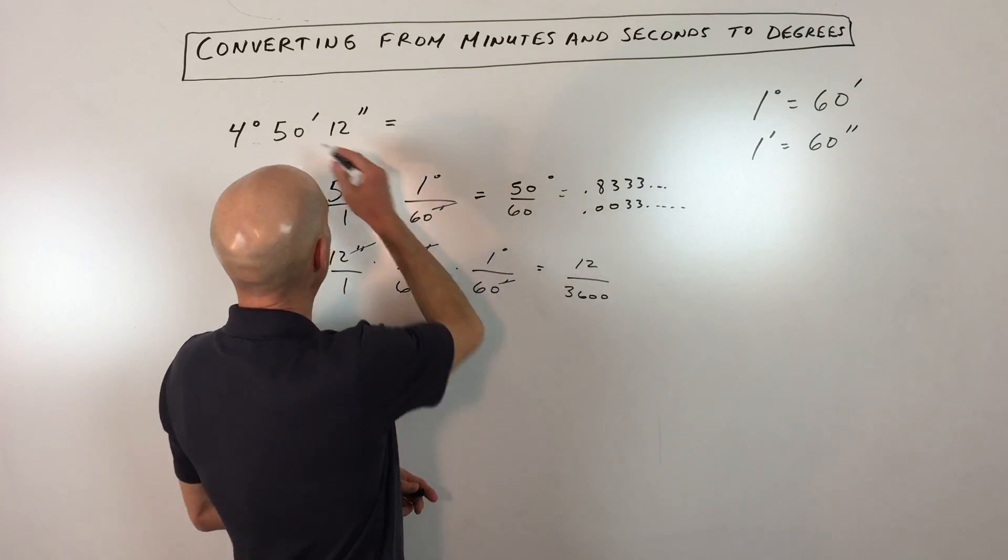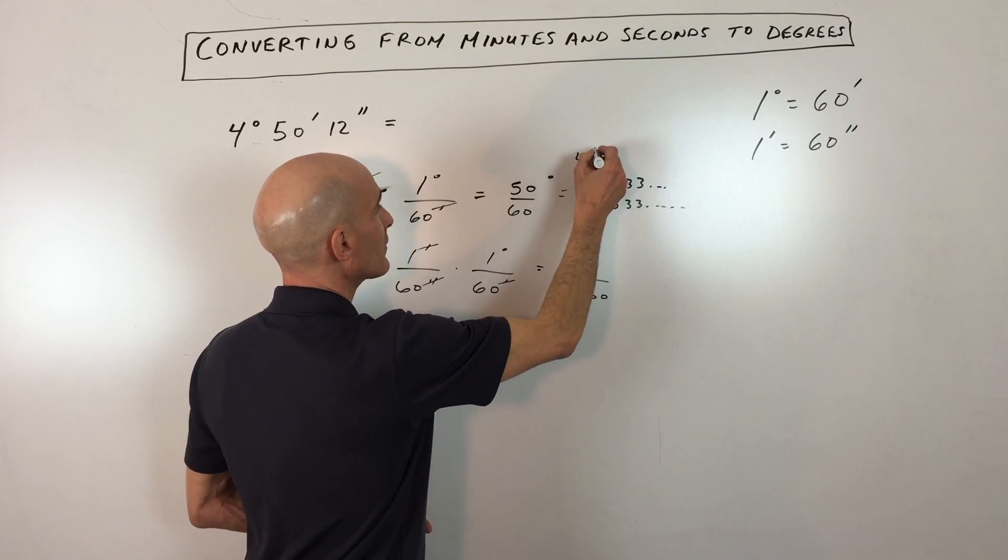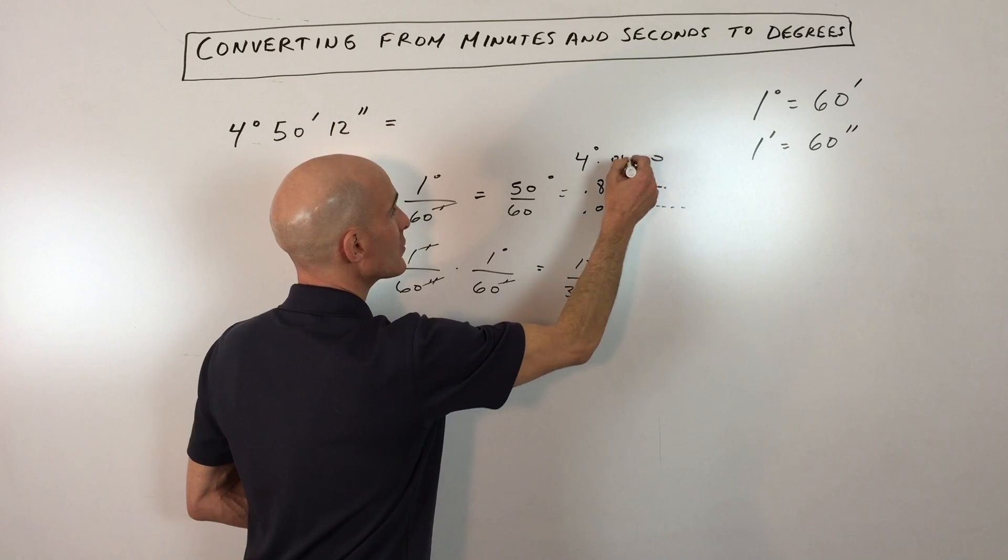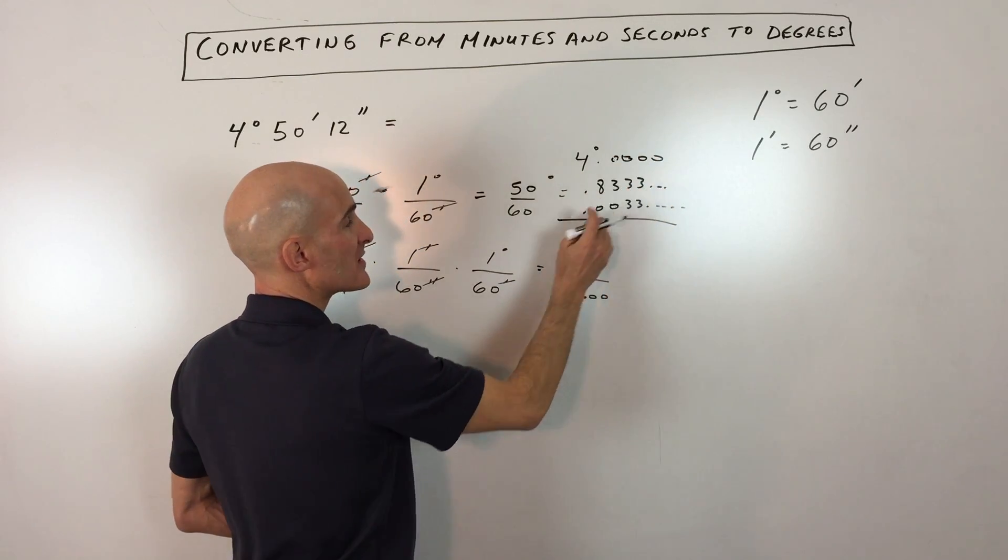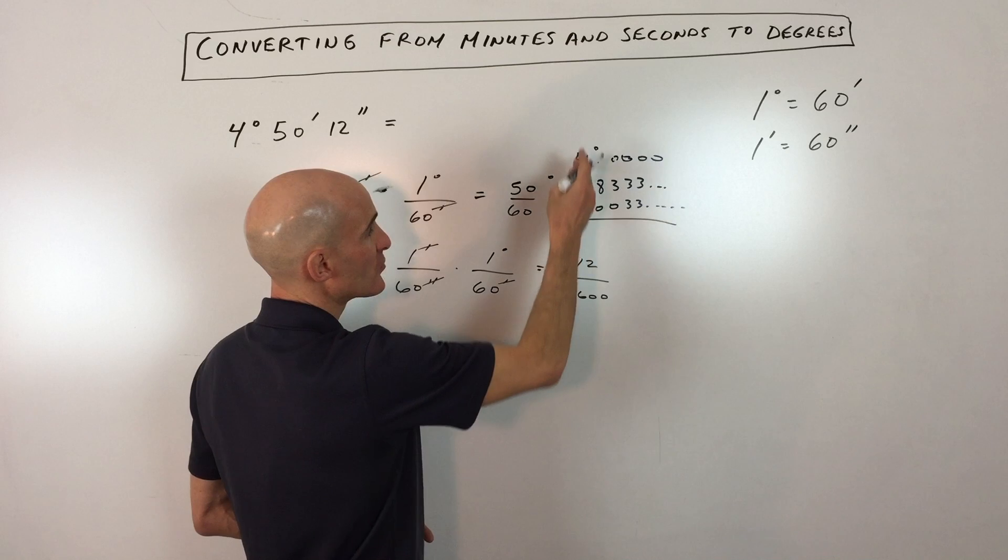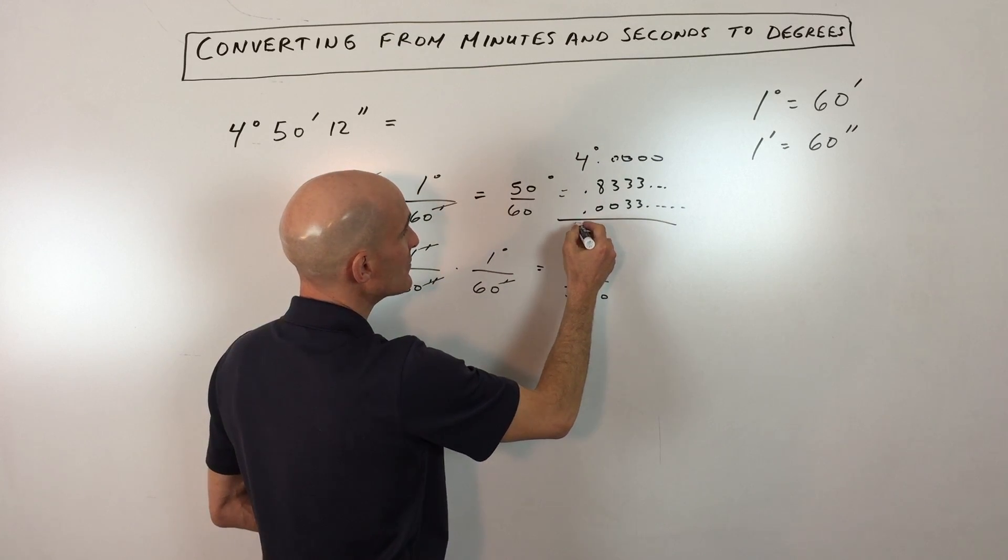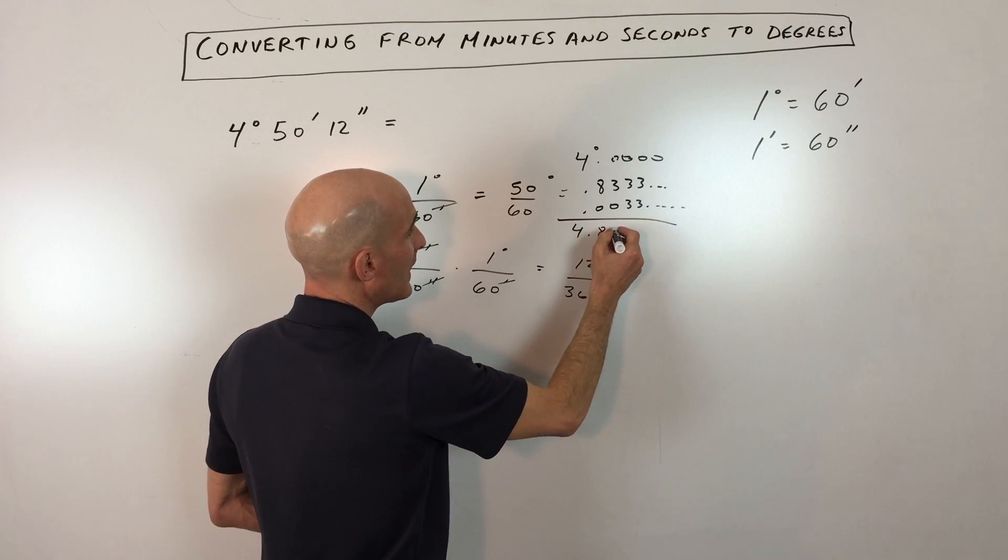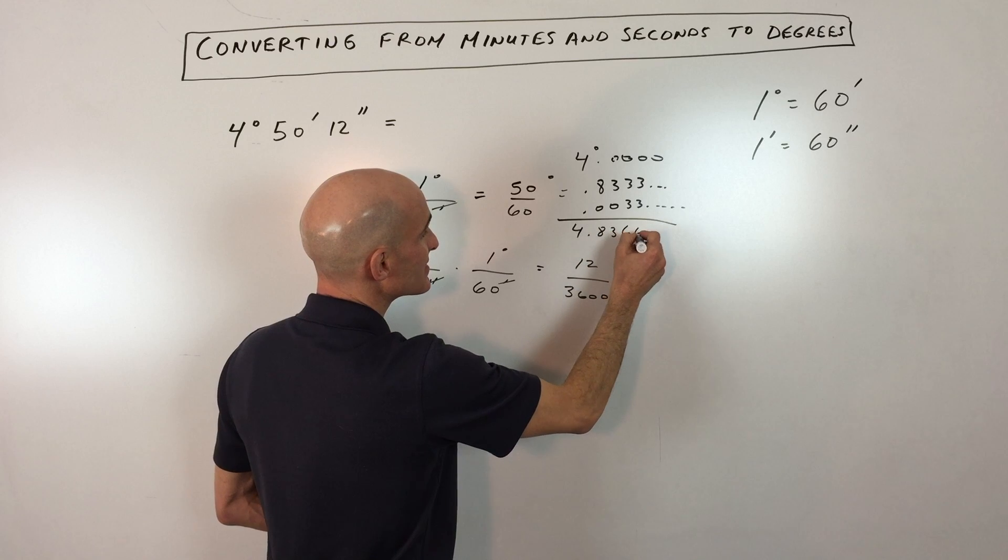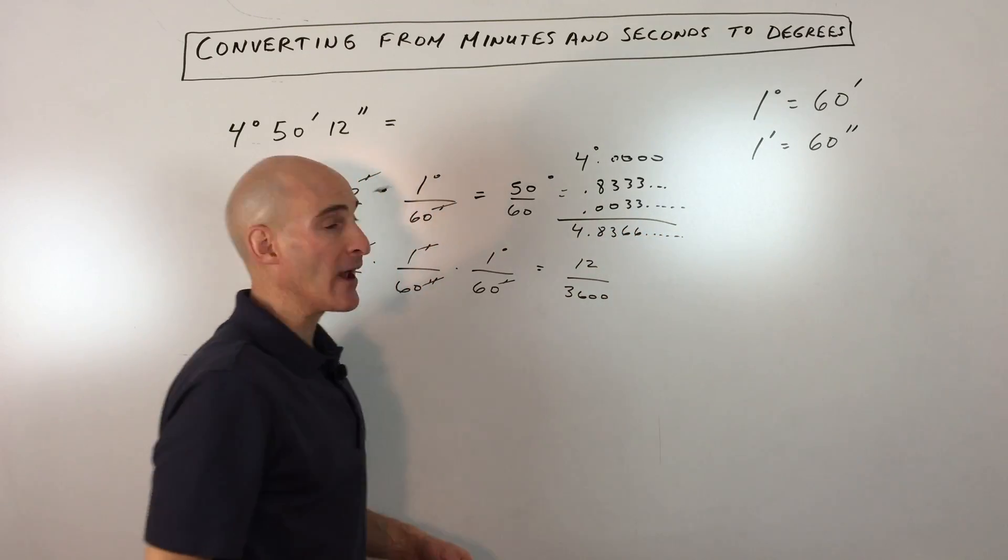So if we add this up, we've got the 4 degrees, and we've got the minutes converted to degrees, the seconds converted to degrees. So if we add straight down, you can see this is going to be 4.8366 and so on degrees.